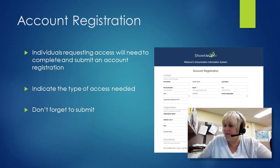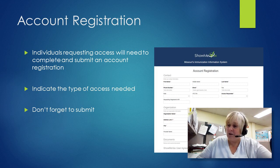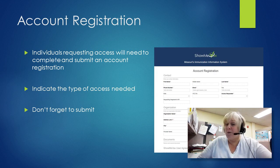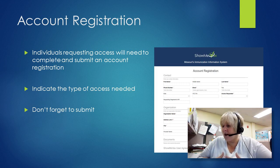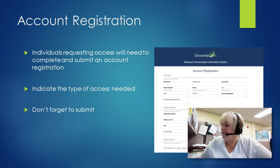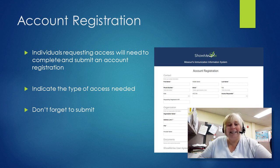Once you get access, you do an account registration. Every individual who needs access must get their own account by filling out this form. Make sure you request the access you need, because otherwise you'll have to go back and redo it. You indicate the type of access needed — if you need all access levels, check them all; if you only need patient management, check that. Make sure after completing the form that you submit it, or we can't process it.